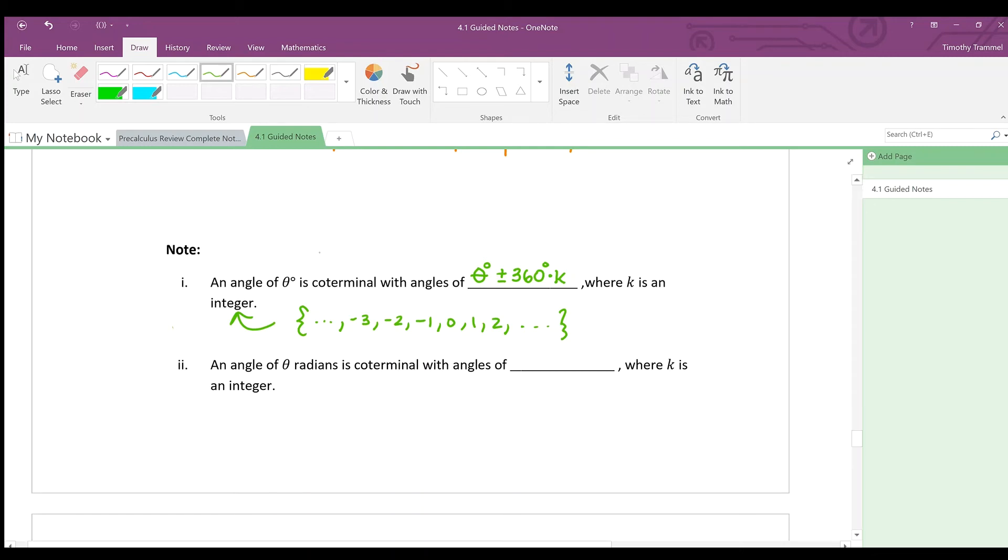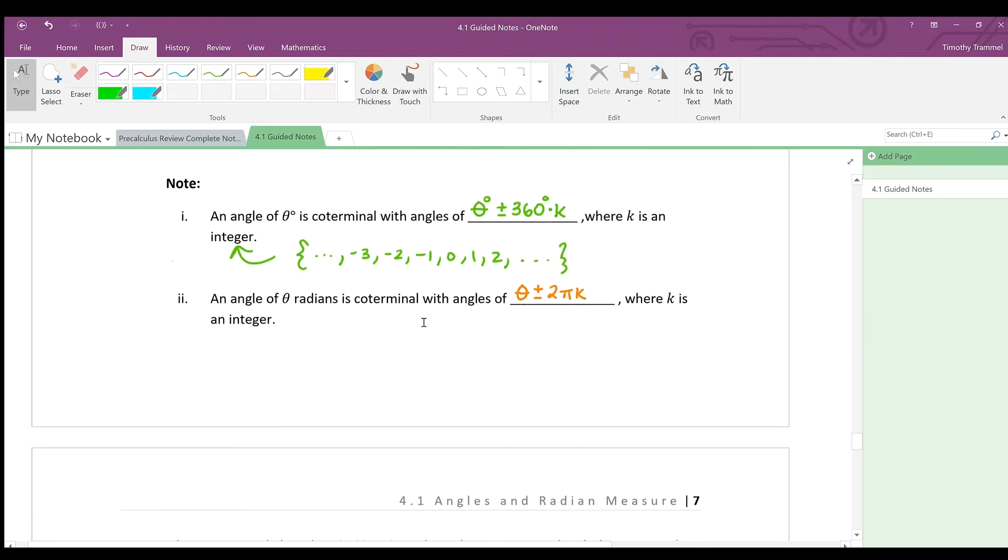And then if we're in radians, we can say almost the exact same thing. The only difference here is it's θ plus or minus 2π times k. That's what our example up above, that's what we were doing. And again, integers, whole numbers and their opposites. All right. Well, we're going to use this idea in our next set of examples. So, let's go down and take a look at that.